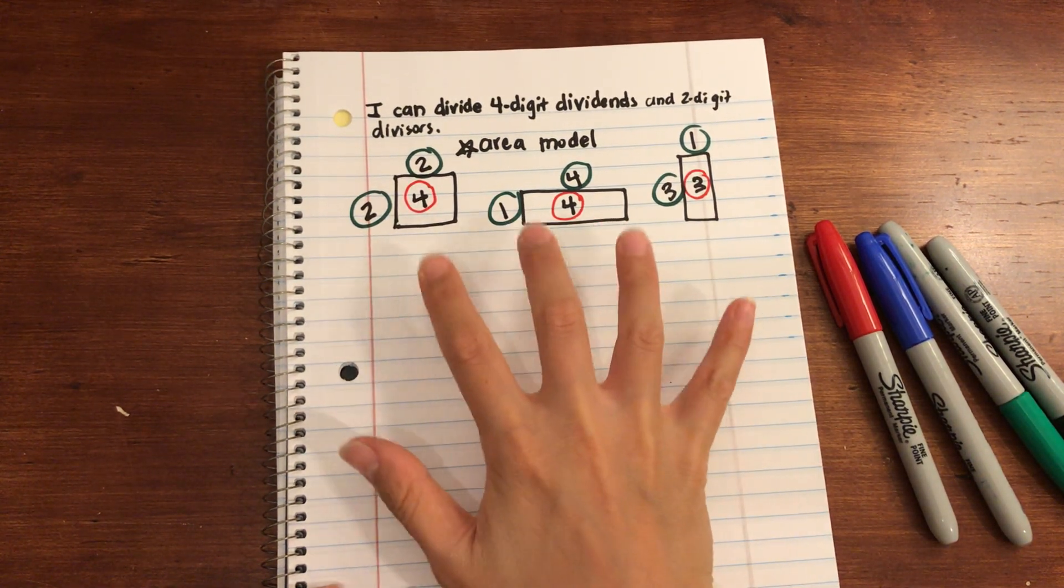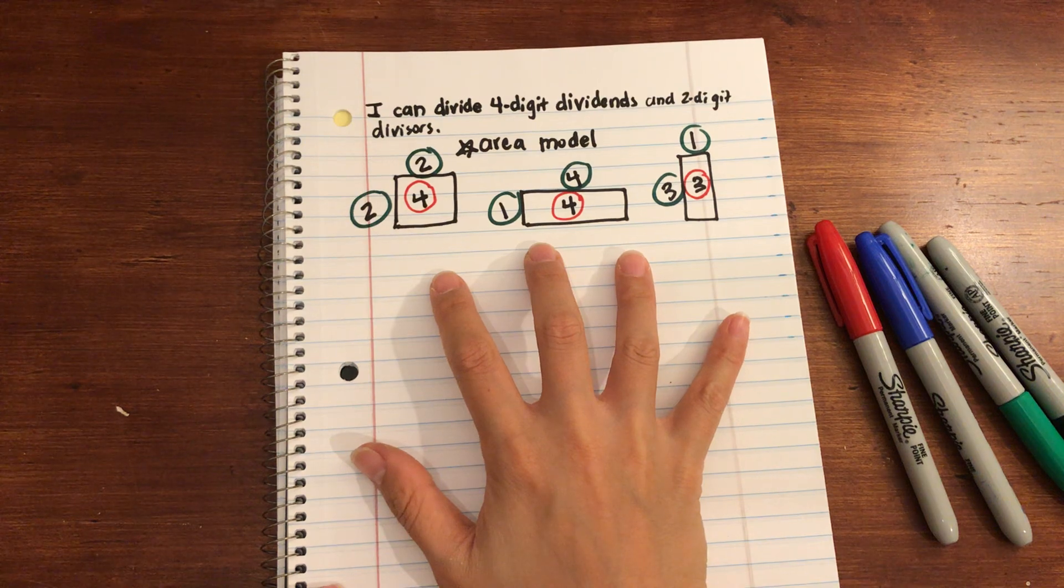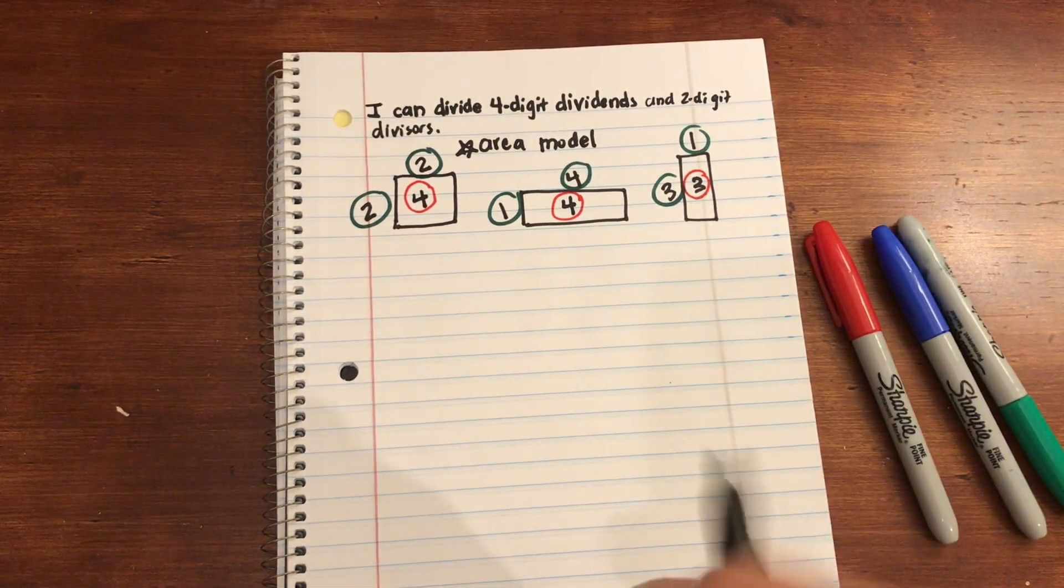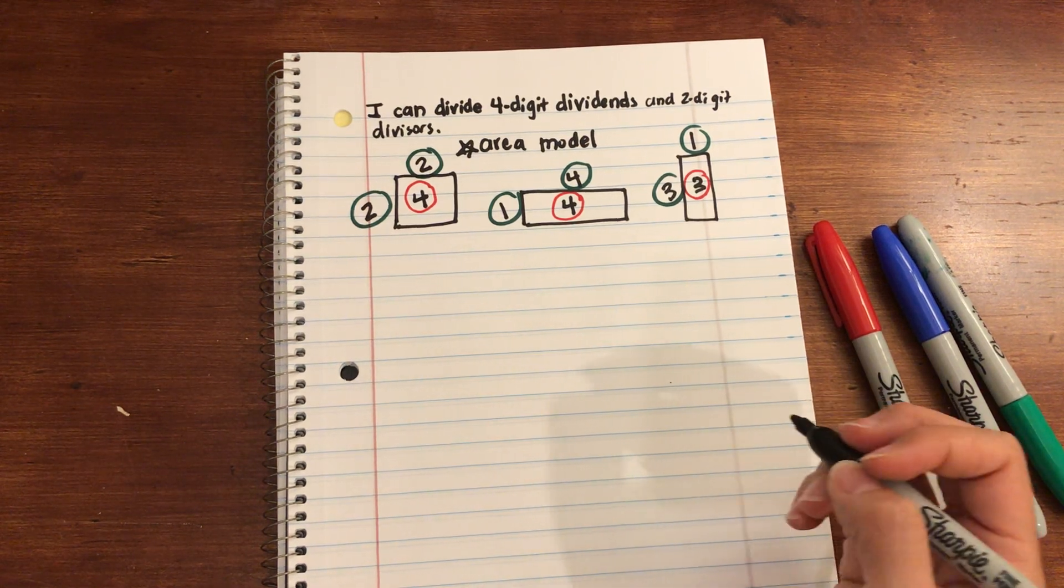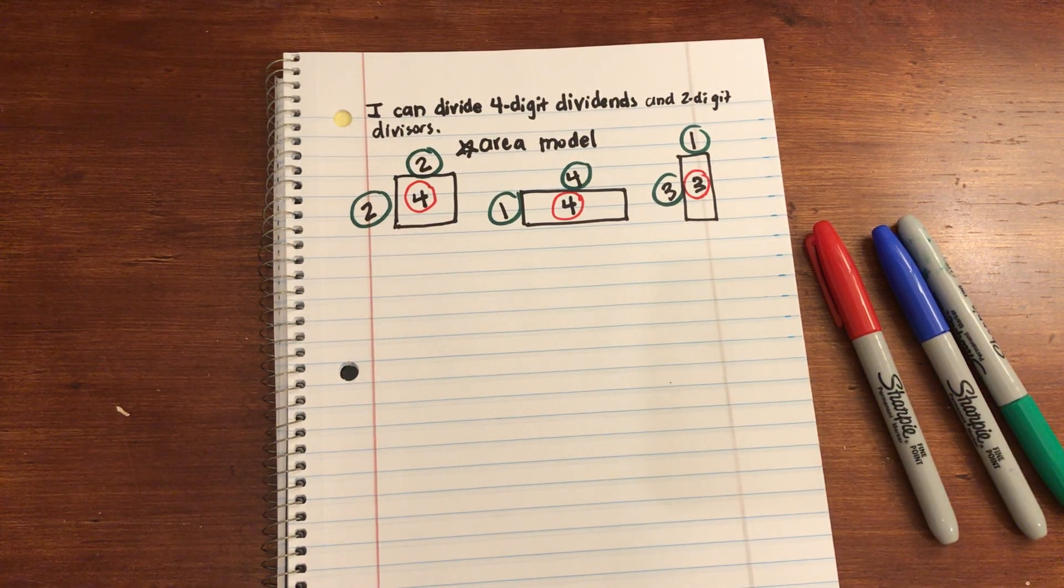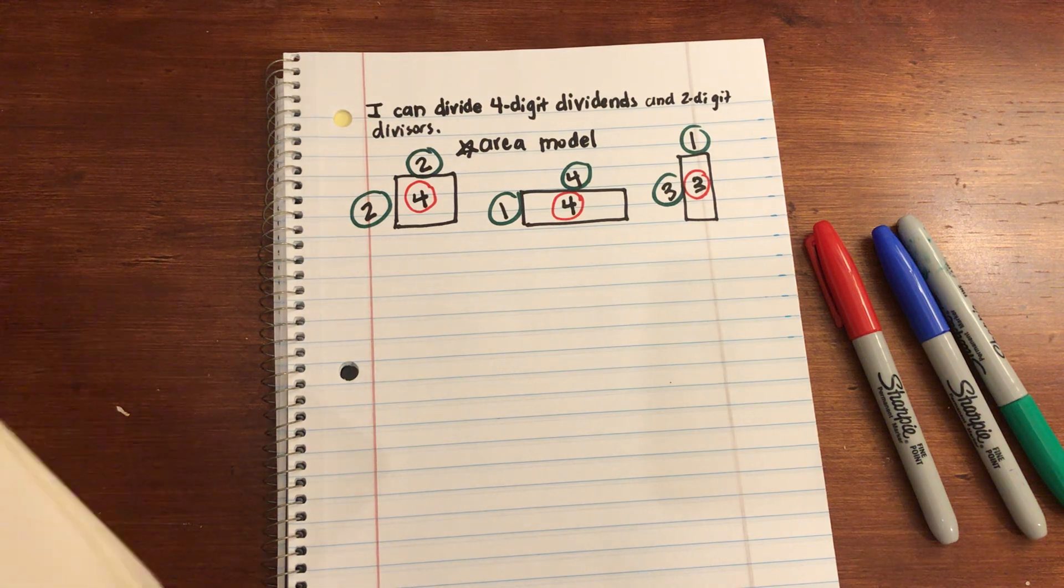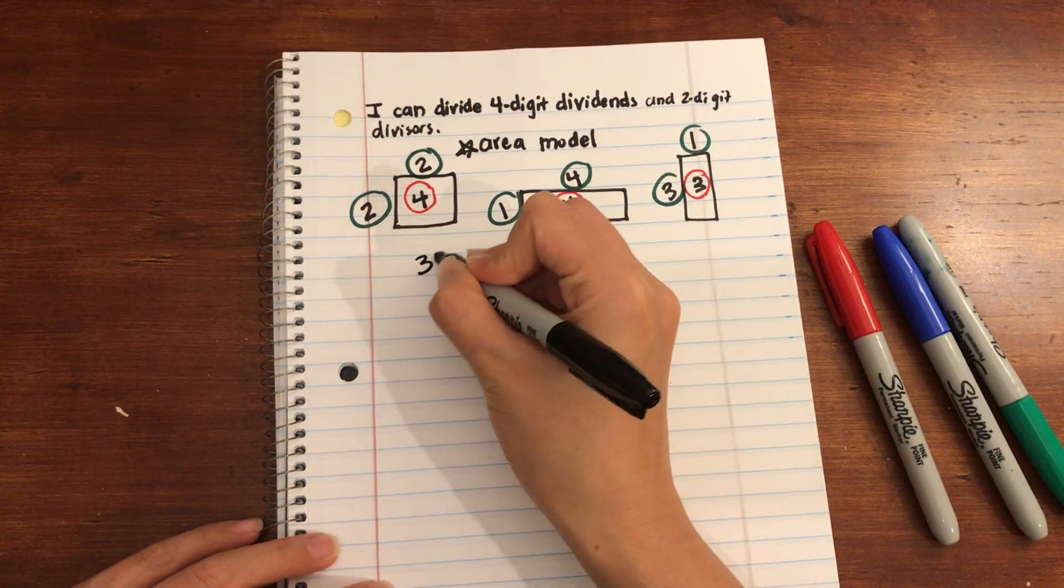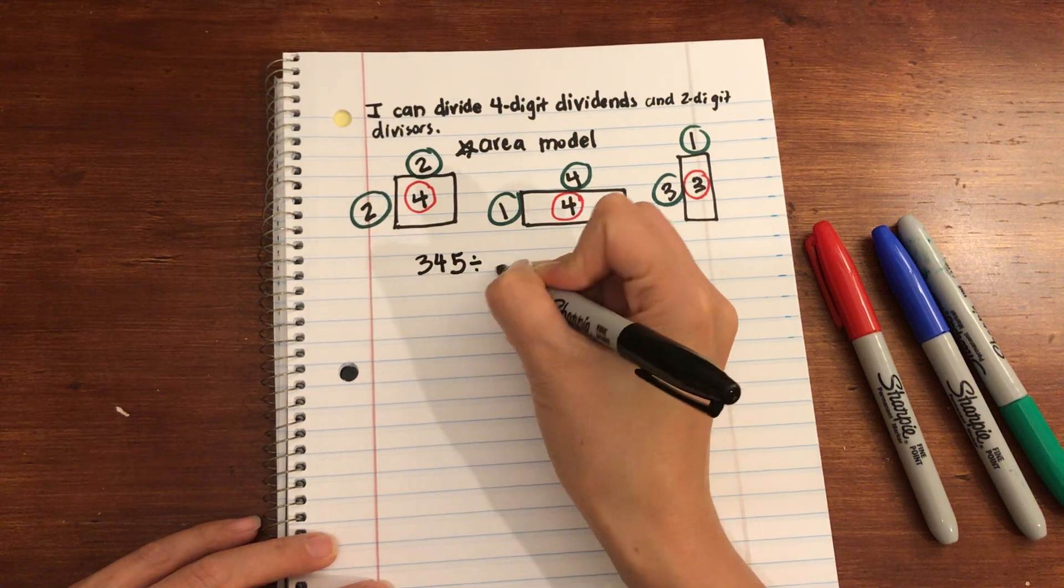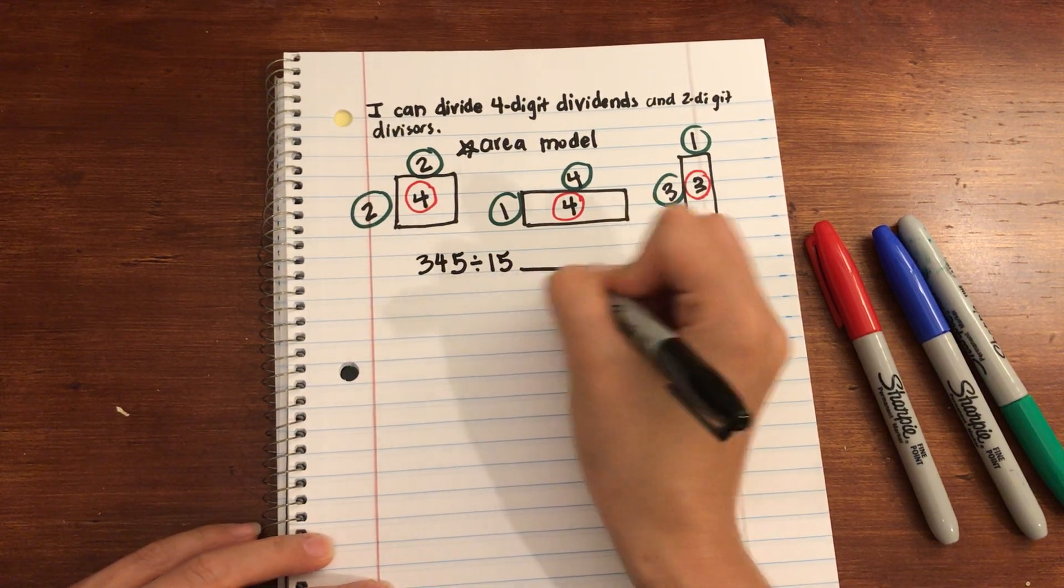But we're going to use the same idea to help us with division. So let's try a 3 digit by 2 to start us off today. We'll do 345 divided by 15 is equal to something.